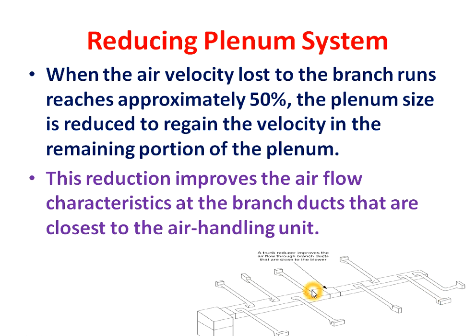Due to the reduction in cross-sectional area, there will be no pressure drop in the branch ducts closer to the AHU, and there will be no high pressure in the branch ducts at the end of the main duct. This is the benefit of the reducing plenum system — by using it, we can avoid the drawbacks of the extended plenum system.